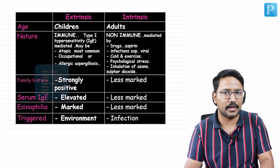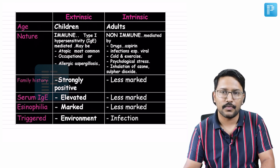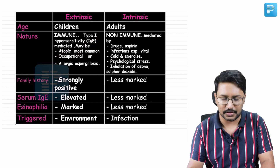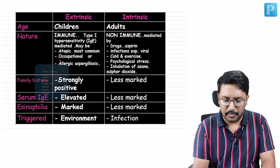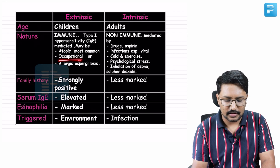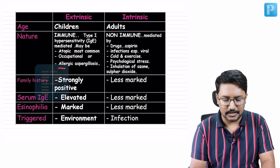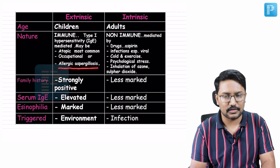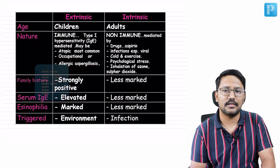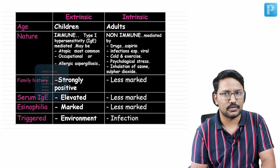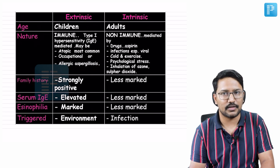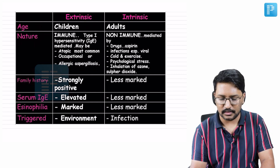Most extrinsic asthma patients have a strong history of atopy — either a family history or a strong personal history. It may also include occupational asthma, and these patients are at increased risk of developing allergic pulmonary aspergillosis.